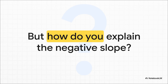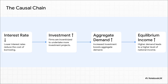This is the exact chain reaction you need to explain — it's like a line of dominoes. A lower interest rate makes investment go up. More investment drives up aggregate demand for goods and services. And that higher demand leads to a higher national income. Pro tip: if you really want to impress the grader, mention the multiplier effect — the idea that the first boost in investment actually creates an even bigger ripple effect of spending and income throughout the economy.